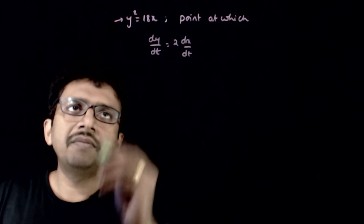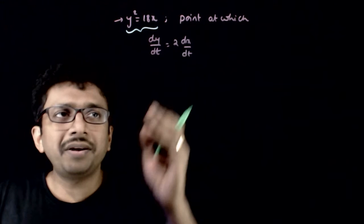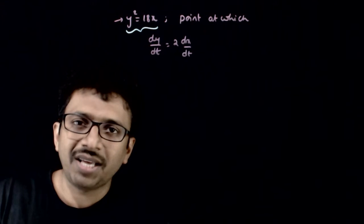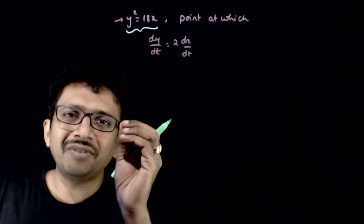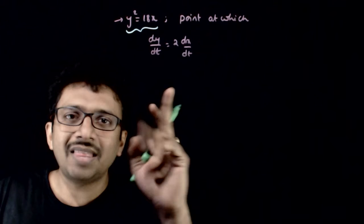So, welcome students. In this question, you are given the curve y squared is equal to 18x. You are asked to find the point at which dy by dt is equal to 2 times dx by dt, that is, the rate at which the ordinate increases is twice the rate at which the abscissa increases.